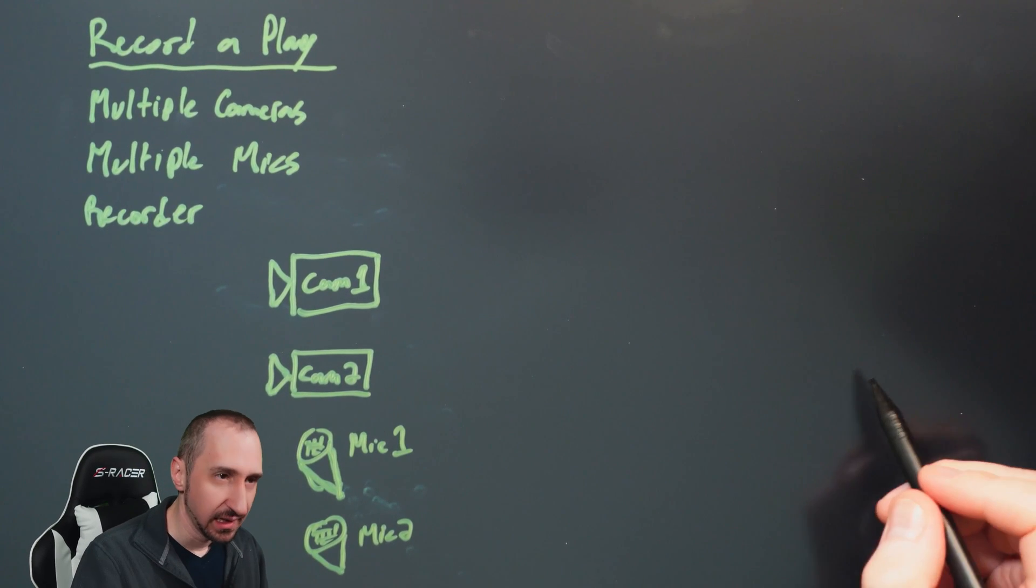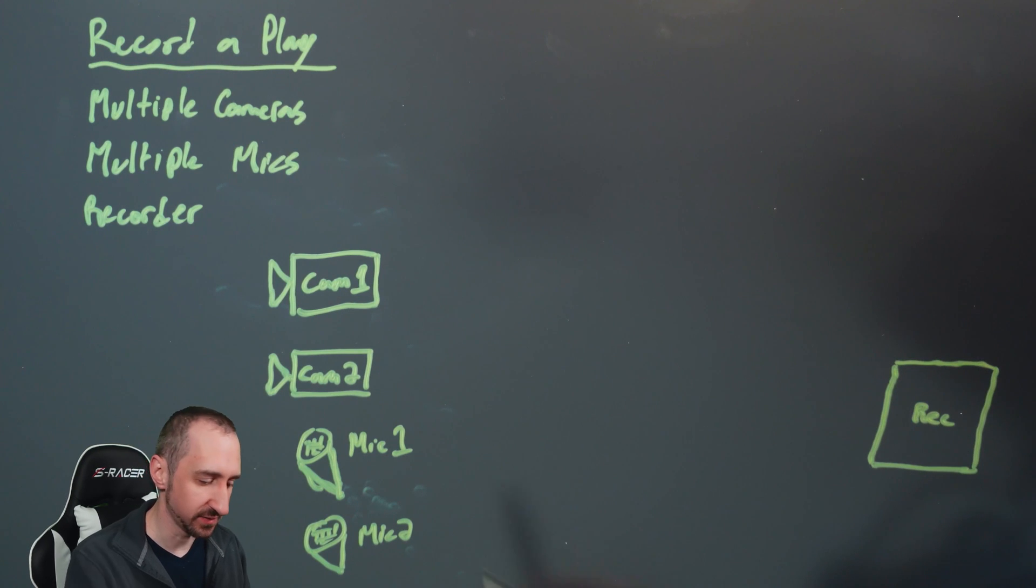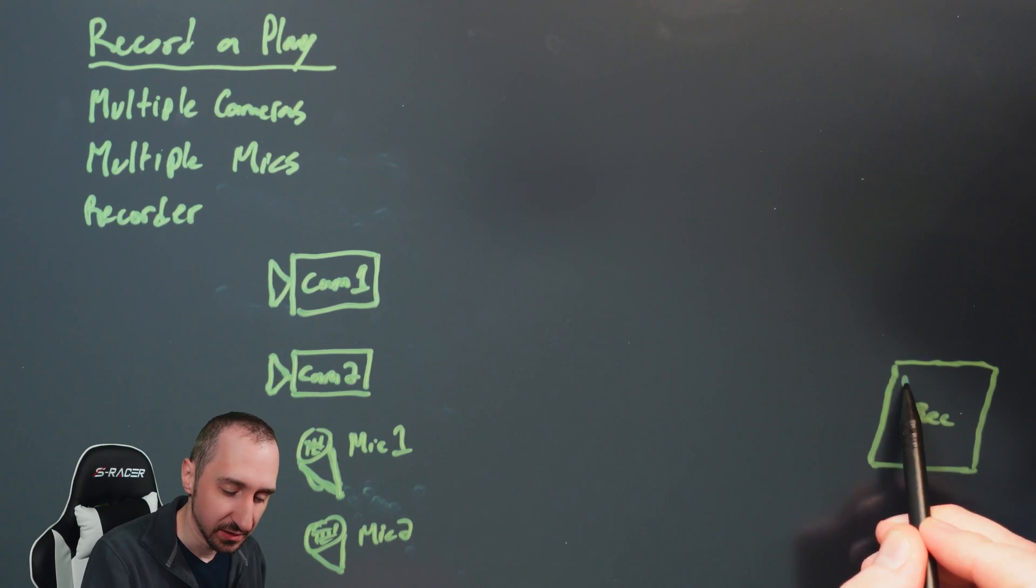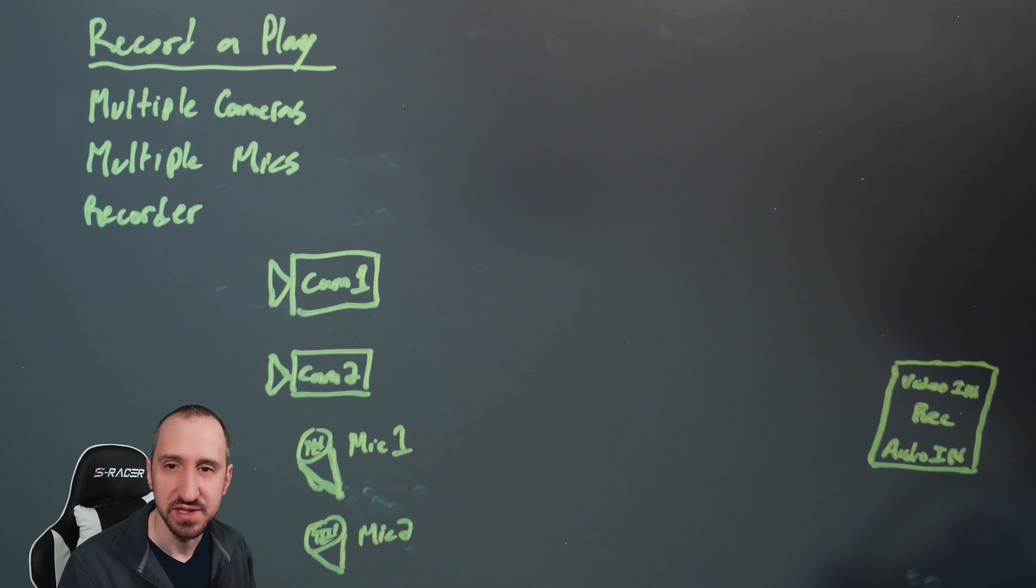And then over here we'll have our recorder. So we have our sources and we have our destination. So how do we get in the middle? Our recorder still only has one video input and one audio input. So we still have the same constraints that we did last time, but now we have multiple sources that we have to deal with. So we can see already that we're going to need some more equipment.